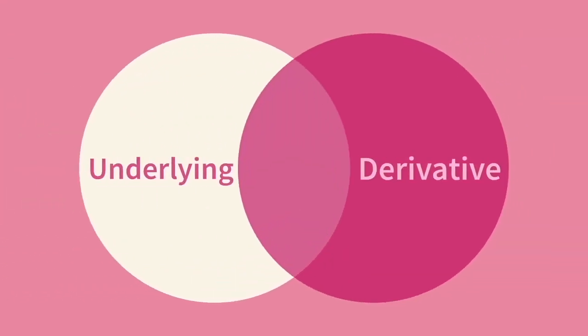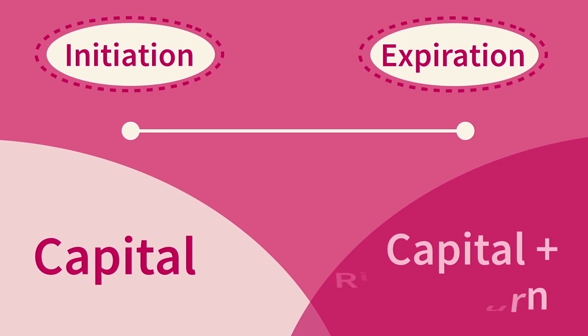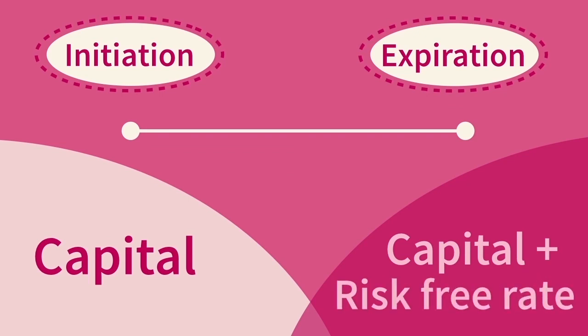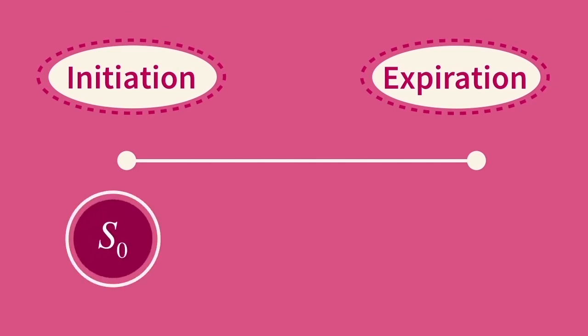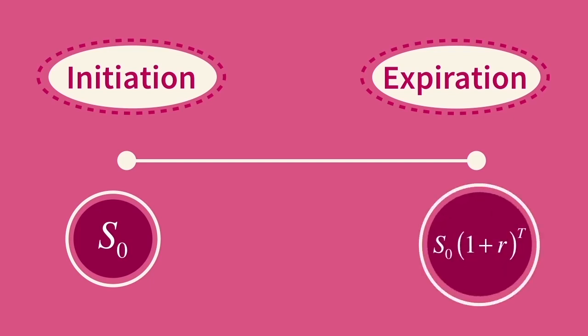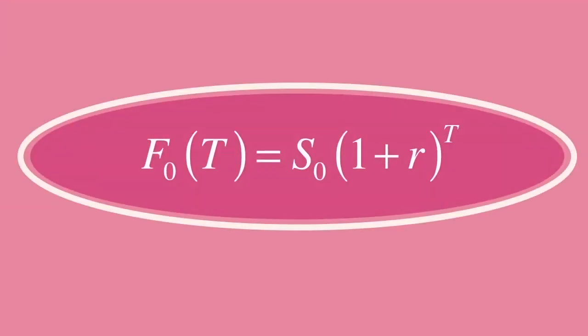Remember that if we combine an underlying with a derivative contract, we have a perfect hedge, and with a perfect hedge we will earn the risk-free rate. By that logic, we can infer that if we buy today for today's spot price S0, we should be able to sell in the future for S0 times 1 plus the risk-free rate to the power of t. So the forward price F0(T) must be equal to the spot price times 1 plus the risk-free rate to the power of t.